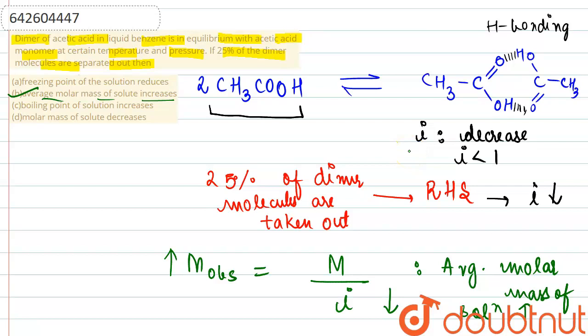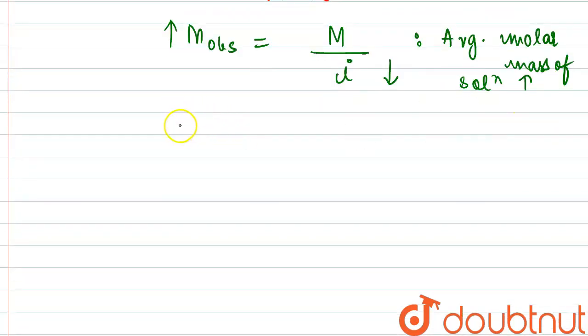Now if we check the first one that is saying freezing point of the solution reduces. In order to understand this, we need to understand the depression in freezing point constant that is given as i into Kf, the cryoscopic constant, multiplied by m.